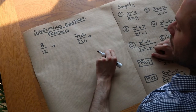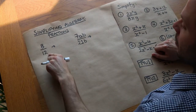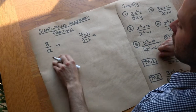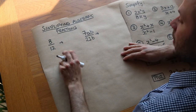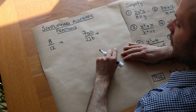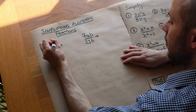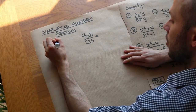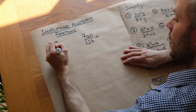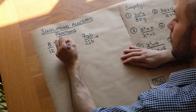Well we know that we can find what's common to the top and the bottom — what factors come to the top and the bottom — and then divide by that number. So 8 and 12 both have a factor of 4 in common, and that allows us to divide the top and bottom by 4, and then we end up with 2 over 3.